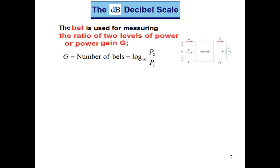So number of bells is actually log of the ratio of these two powers, output power over input power. But this is a large quantity so we go one scale down and we call it decibel. So decibel dB is 10 times log₁₀ of the two powers, output power over input power and this is very commonly used, decibels or dB.